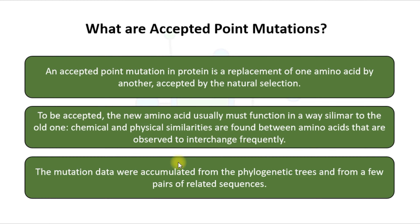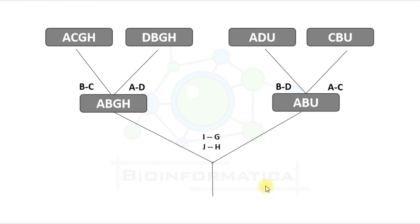The mutation data were accumulated from phylogenetic trees and from a few pairs of related sequences. In a simplified phylogenetic tree, four observed proteins are shown at the top, and inferred ancestors are shown at the nodes. Inferred ancestors and amino acid exchanges are indicated along the branches.